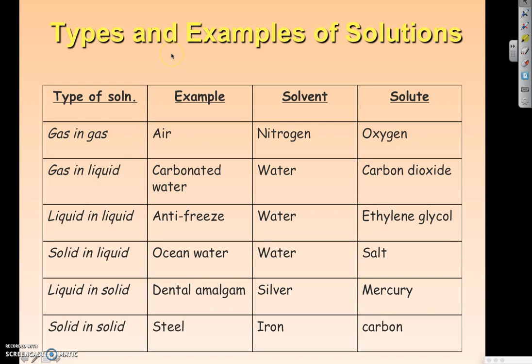Here's a nice chart that I think gives us an example of every different kind of solution that we can have. We can have a gas dissolved in a gas. So, air, we've already used that example. You have nitrogen and oxygen. Oxygen is being dissolved in the nitrogen because we have more nitrogen in air than actually oxygen.